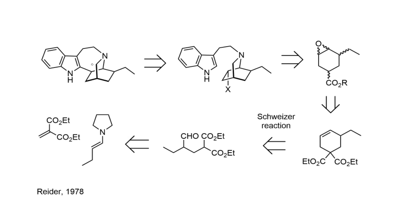For the disconnection approach from the 1985 synthesis, the first disconnection is the bond between indole C1 and the isoquinuclidine, which disconnects the molecule back to a tryptamine fragment where the nitrogen is still embedded in the rest of this ring system. Over a number of synthetic steps, this part of the molecule was derived from a cyclohexene epoxide.